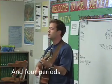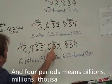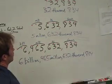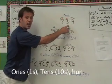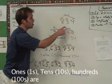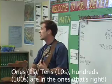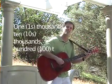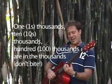And four periods means billions, millions, thousands, and ones. Ones, tens, hundreds are in the ones period. One thousands, tens thousands, hundreds thousands are in the thousands period.